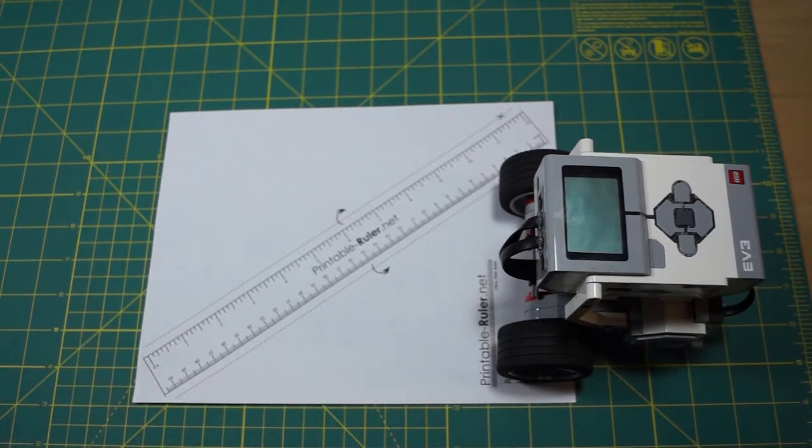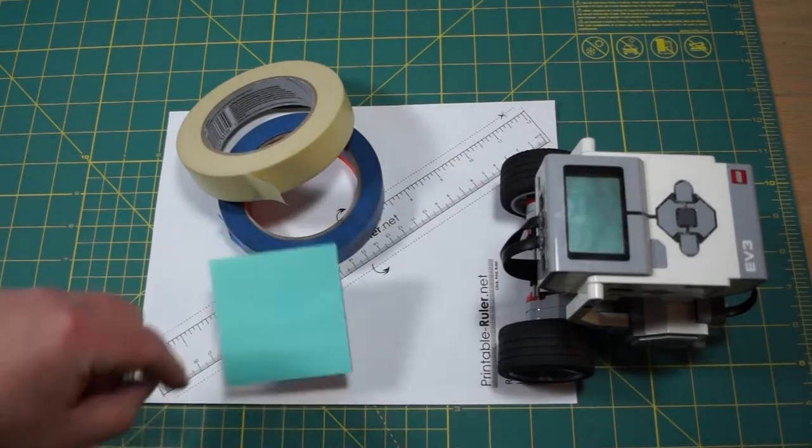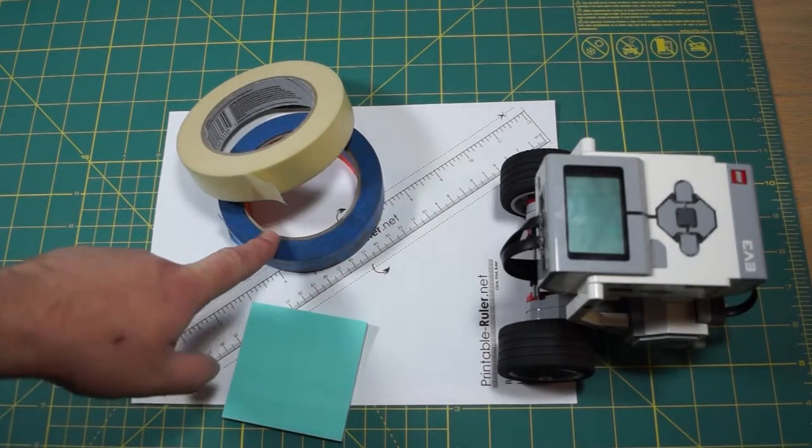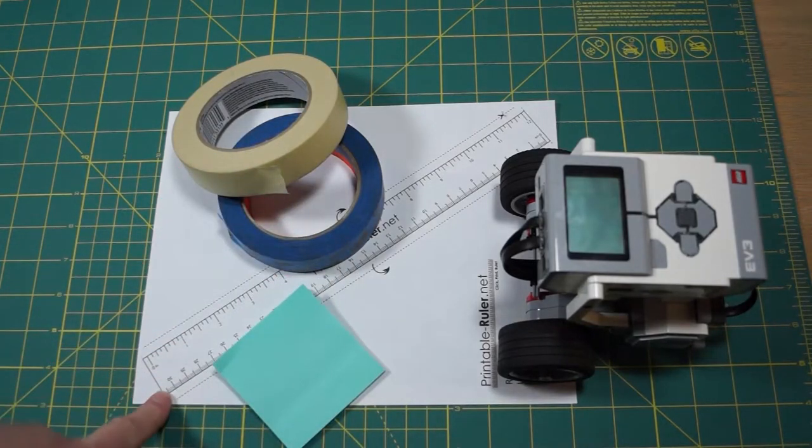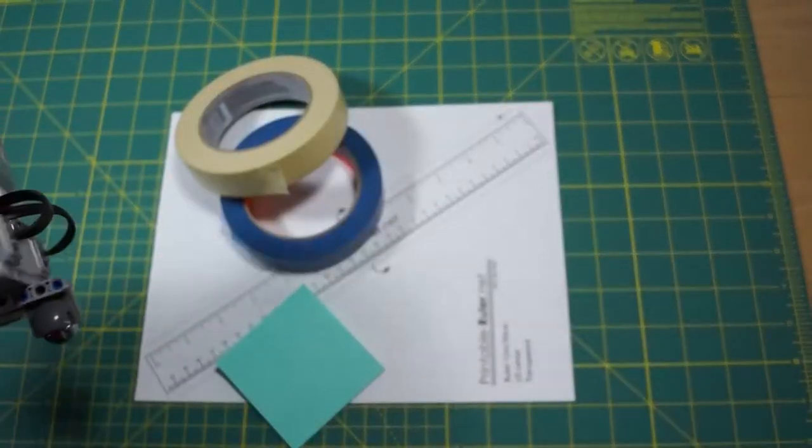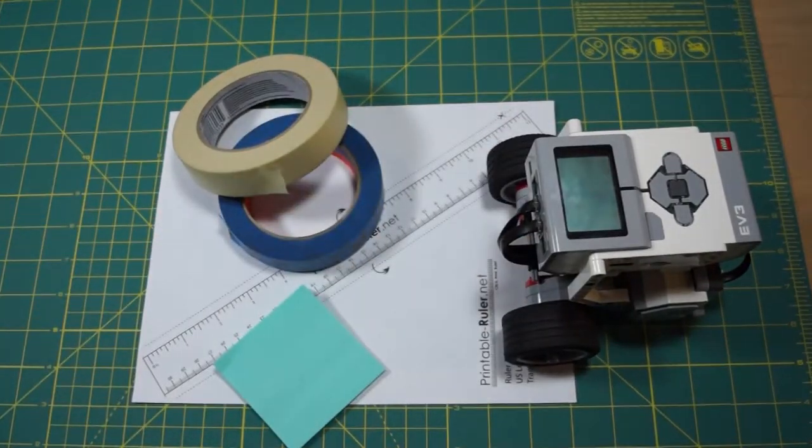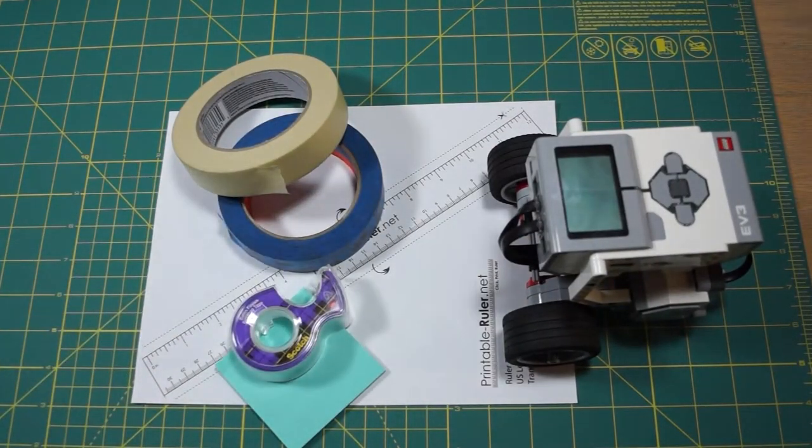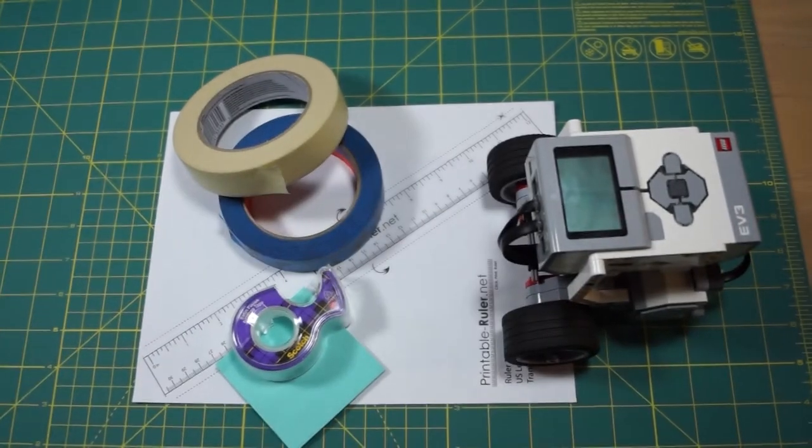We're going to need our printable ruler. I'm going to provide a link in the video description. We're also going to need some way of marking a start line. So that could be some type of painter's tape, masking tape, a post-it note. Once again, something that's going to be just very simple that's going to allow us to line up the leading edge of our bot with a starting point. And then the last thing that we're going to need is some kind of tape to affix our ruler to the work surface. So I'm going to get the ruler cut out, I'm going to get it taped down to the work surface, we're going to go from there.